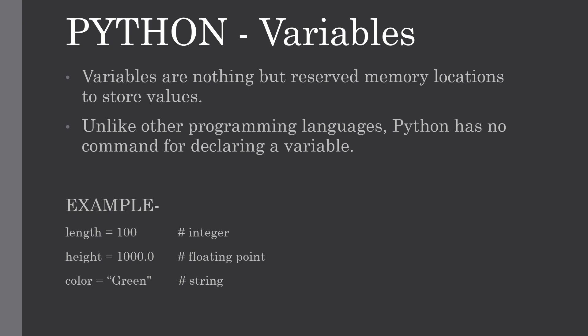Unlike other programming languages, Python has no command for declaring a variable. It is automatically created the moment we first assign a value to it. We also don't need to specify a data type — based upon the data type of the variable, the interpreter allocates memory and decides what can be stored. By assigning different data types to variables, we can store integers, decimals, or characters.